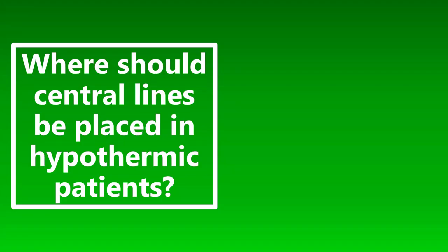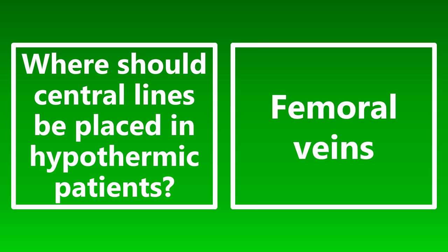First question: where should central lines be placed in hypothermic patients? It's going to be in the femoral veins. The reason is that in hypothermic patients with critically low core temperature, the myocardium is extremely irritable. Putting any device near the heart could cause life-threatening arrhythmias. So if you have a hypothermic patient and need to place a central line, you want femoral access.